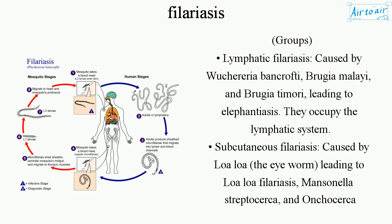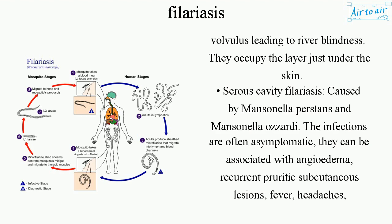Subcutaneous filariasis, caused by Loa loa, the eye worm, leading to Loa loa filariasis; Mansonella streptocerca; and Onchocerca volvulus, leading to river blindness. They occupy the layer just under the skin.